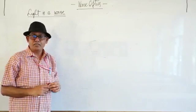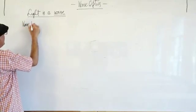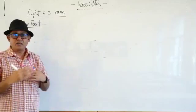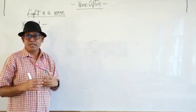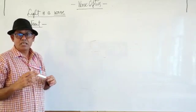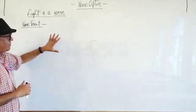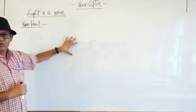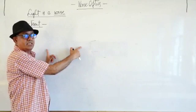First of all we will have to understand what is a wave front. Our first topic is wave front. We define wave front as a continuous locus of points which are vibrating in the same phase. For example, if a wave front is this whiteboard, then each and every point on it will have the same phase, meaning the phase difference between any two points on a wave front is always zero.